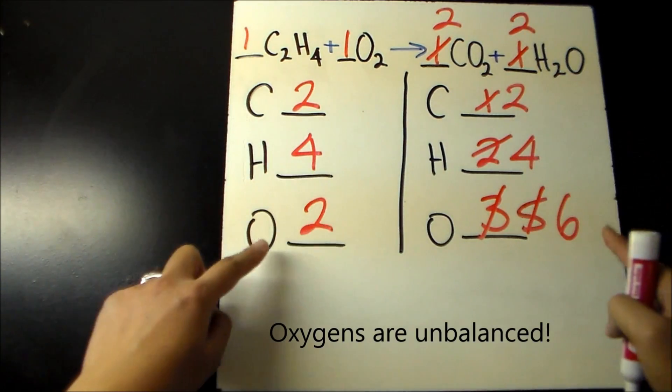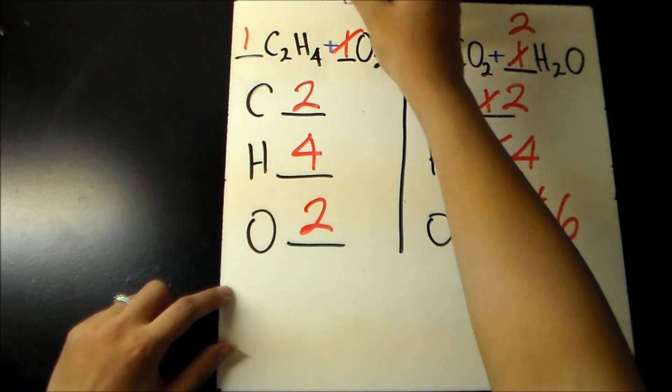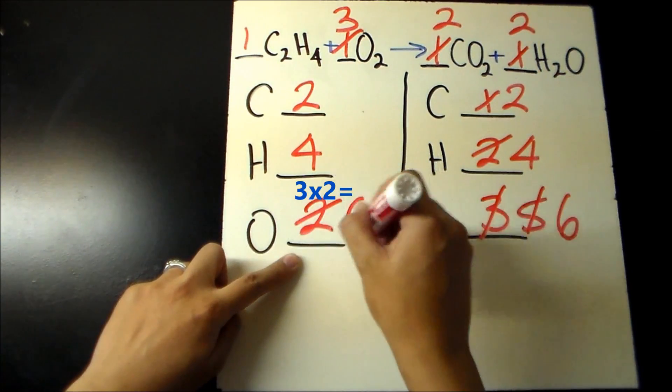Now the only element that is left unbalanced is oxygen. By adding a coefficient of 3 before O2, the number of oxygens changes to 6 on the left.